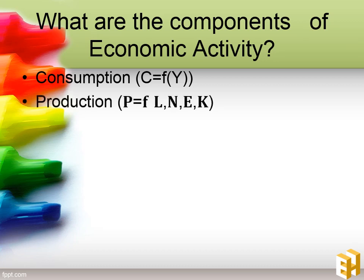Second is production. Production is a function of four factors of production. There are four factors of production: land, labor, capital, and entrepreneur. L stands for labor, N stands for land, E stands for entrepreneur, and K stands for capital. Production is a function of these four factors, and these factors would decide your production activity.